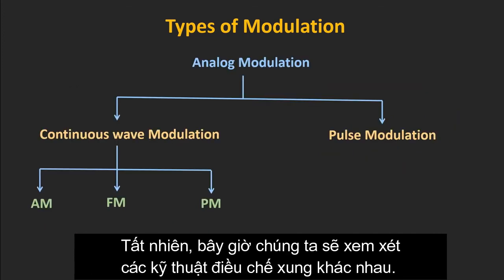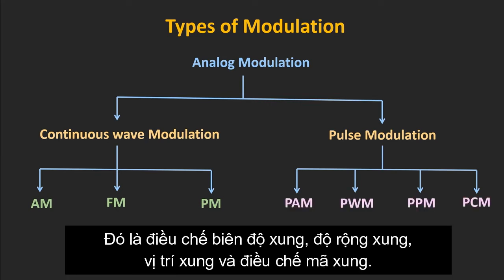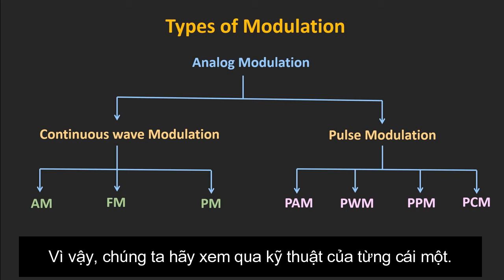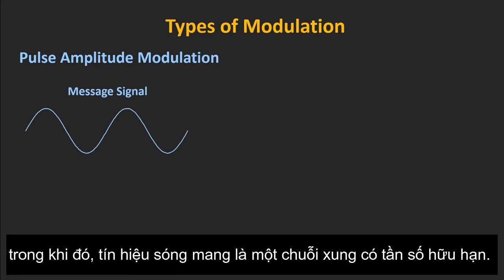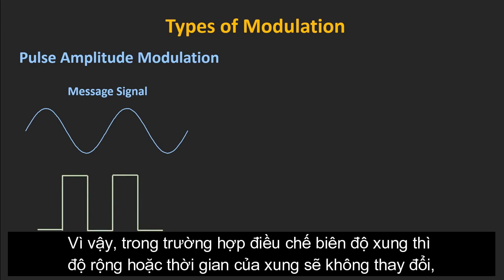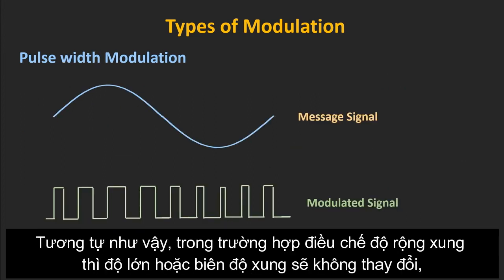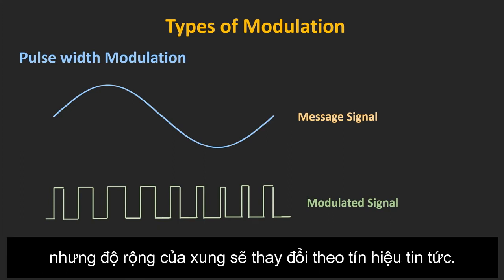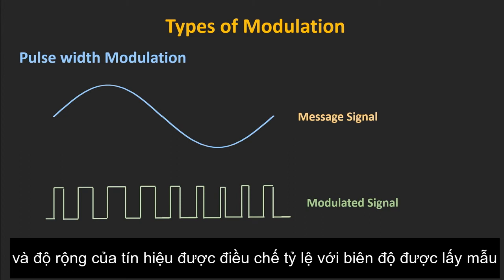Now let's see the different types of pulse modulation techniques. There are four types: pulse amplitude modulation, pulse width modulation, pulse position modulation, and pulse code modulation. In all these techniques, the message signal is analog in nature while the carrier signal is a pulse train of finite frequency. In pulse amplitude modulation, the width or duration of the pulse remains the same, but the height or amplitude of the pulse signal changes according to the message signal. In pulse width modulation, the amplitude of the pulse remains the same, but the width of the pulse changes according to the message signal. The message signal amplitude is sampled at the rising edge of each pulse, and the width of the modulated signal is proportional to the sampled amplitude.